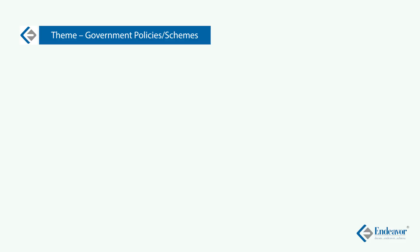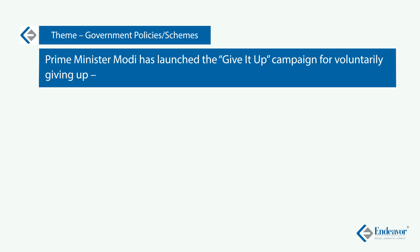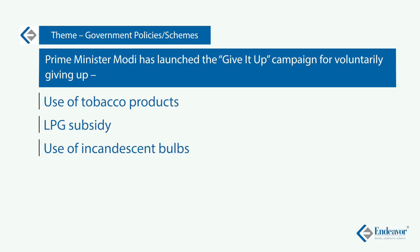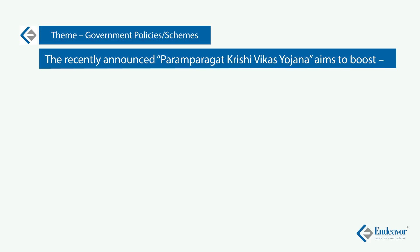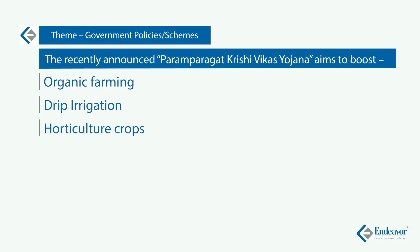So those were the questions about two new government schemes in 2016. Similarly, 2015 had a question on the Prime Minister's newly launched program 'Give It Up' campaign. The question was: the Prime Minister is urging Indians to give up which of the following? — a) tobacco products, b) LPG subsidy, c) use of incandescent bulb, or d) use of plastics. And another question was on Paramparagat Krishi Vikas Yojana. It was aimed to boost — a) organic farming, b) drip irrigation, c) horticultural crops, or d) vegetable crops.